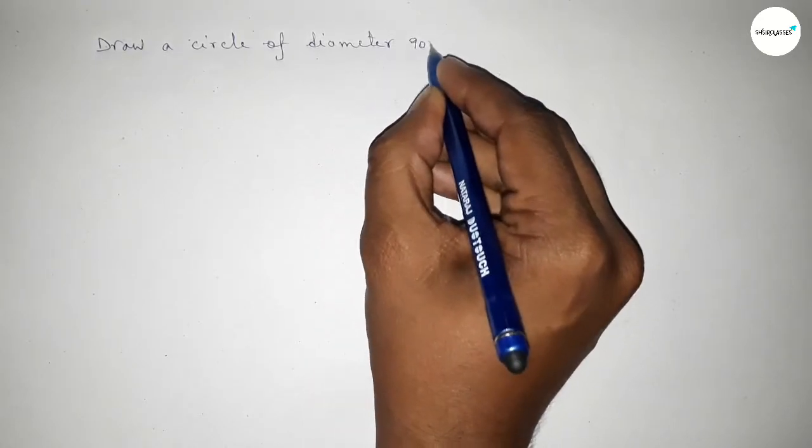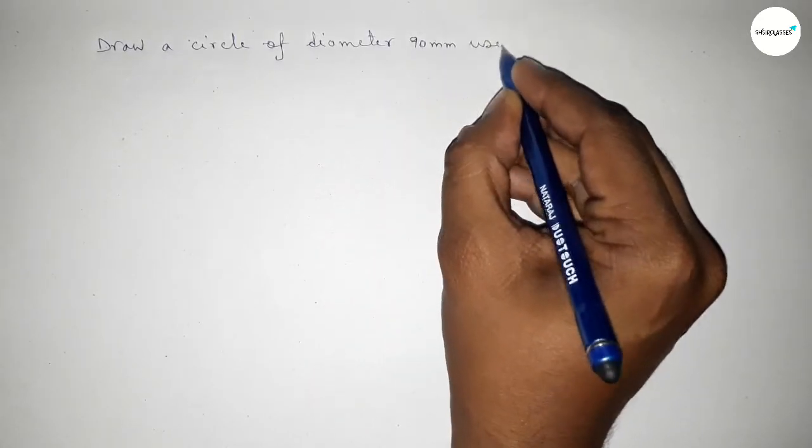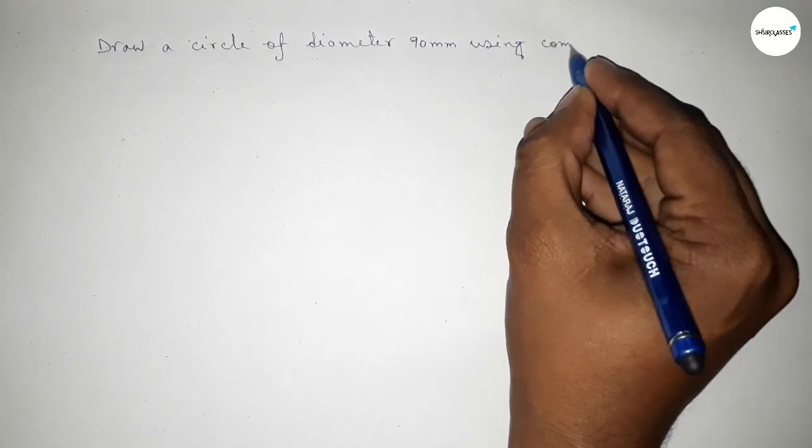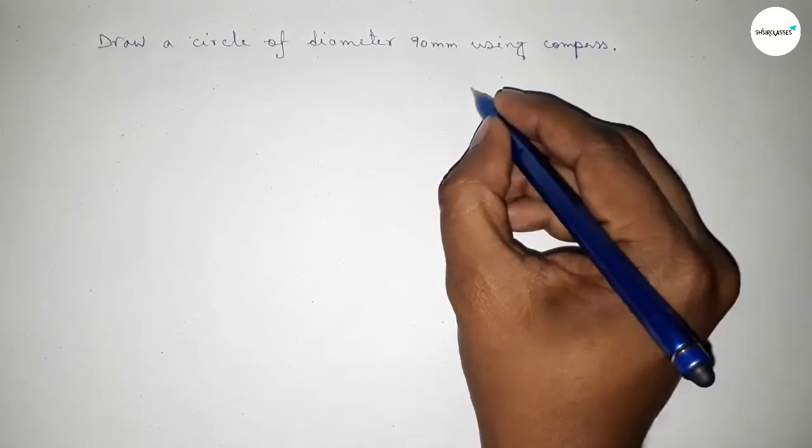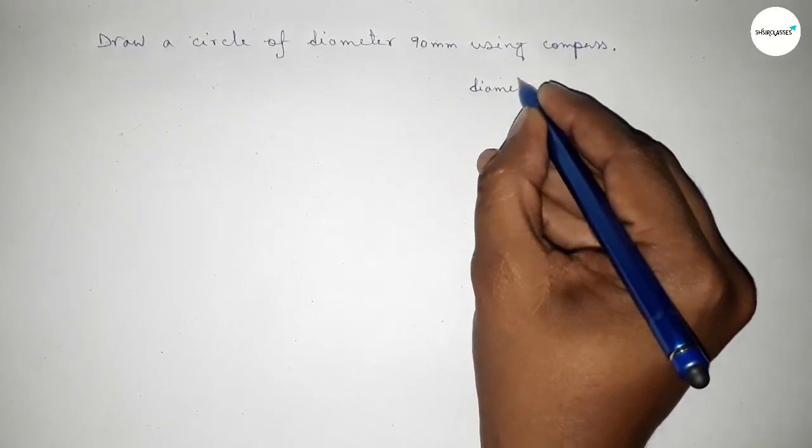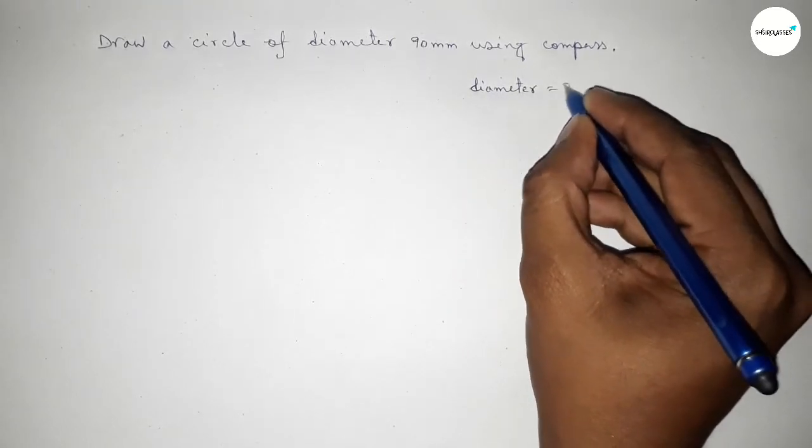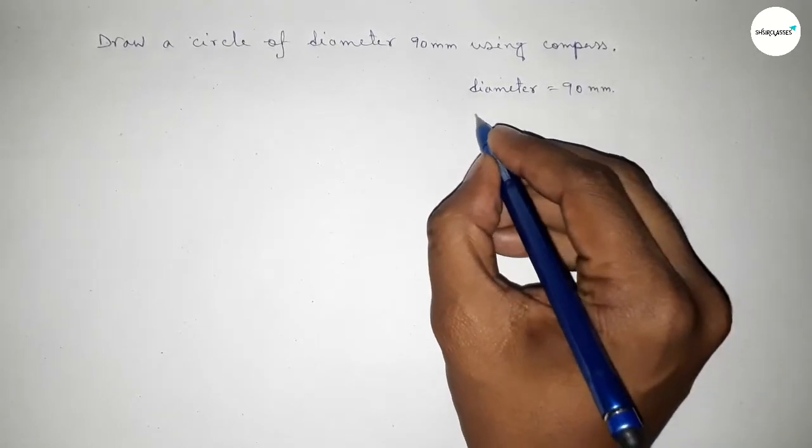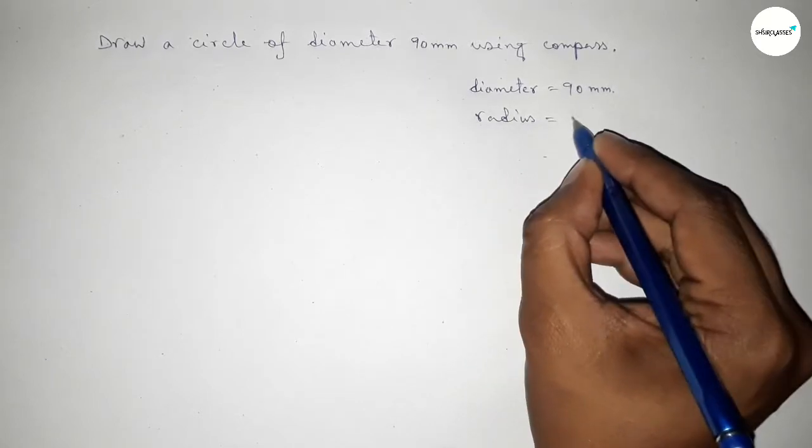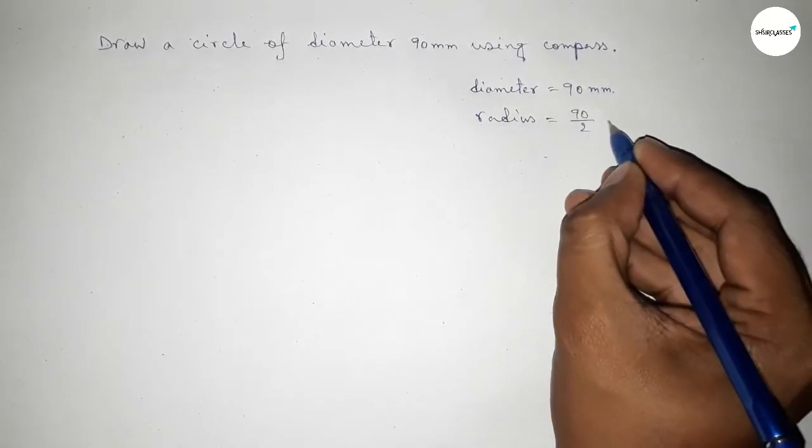First of all, talking about diameter. Diameter equals 90 millimeter. Next, finding the radius. If you divide it by 2, so 90 divided by 2, so this is 45 millimeter.